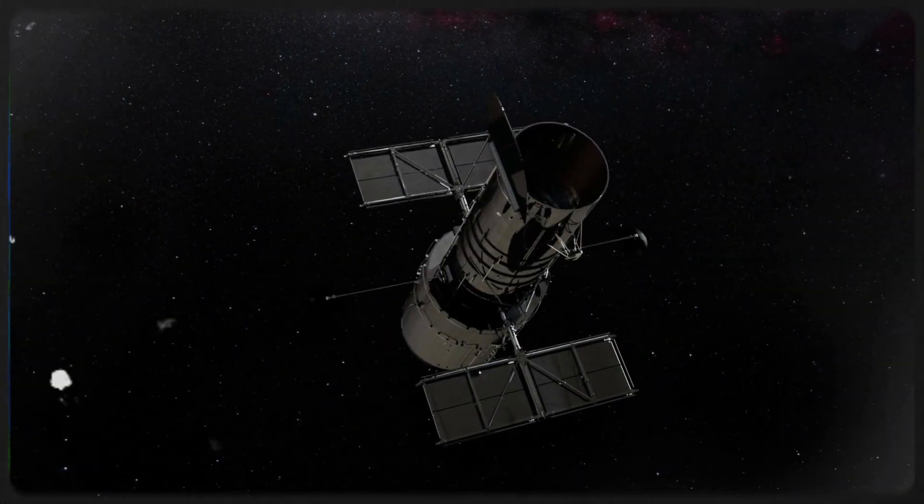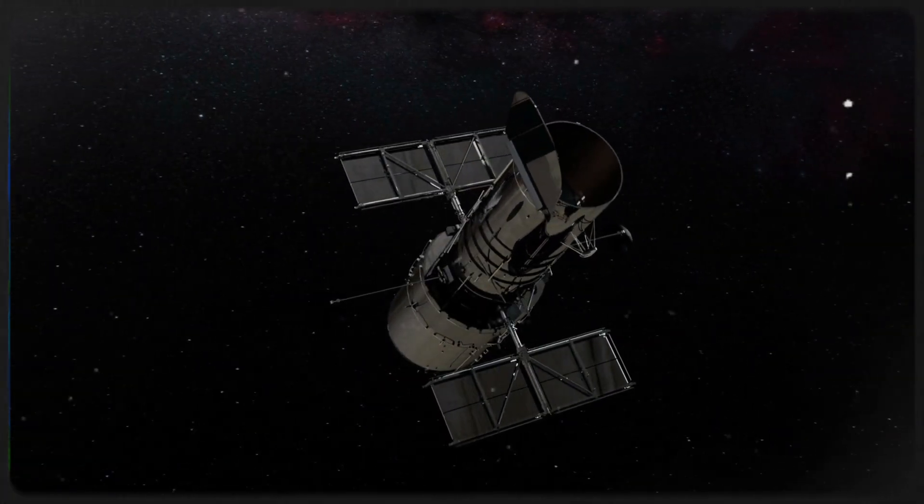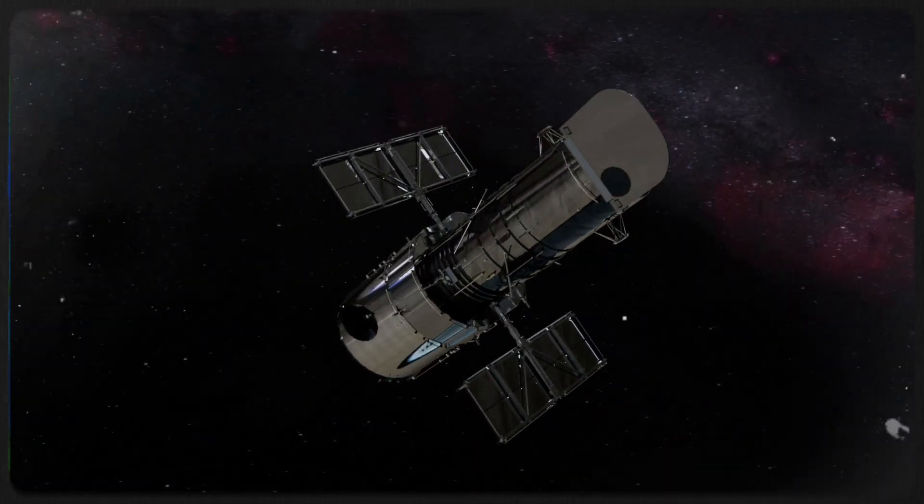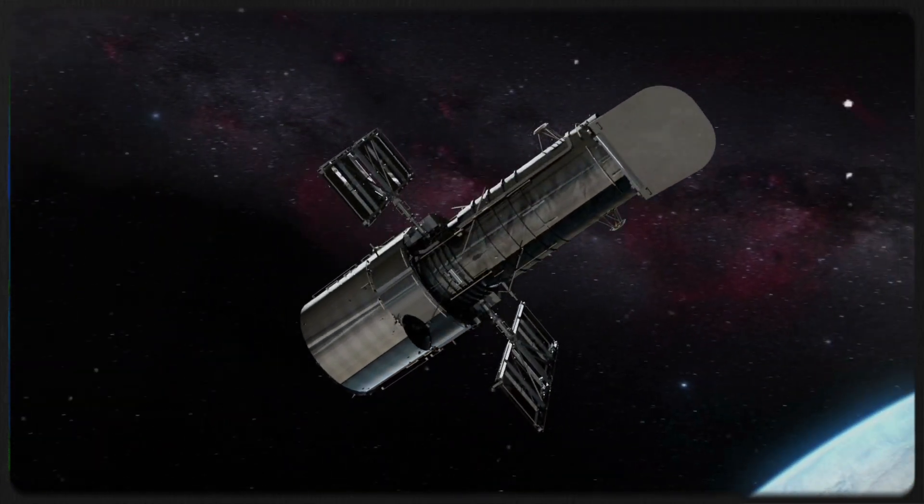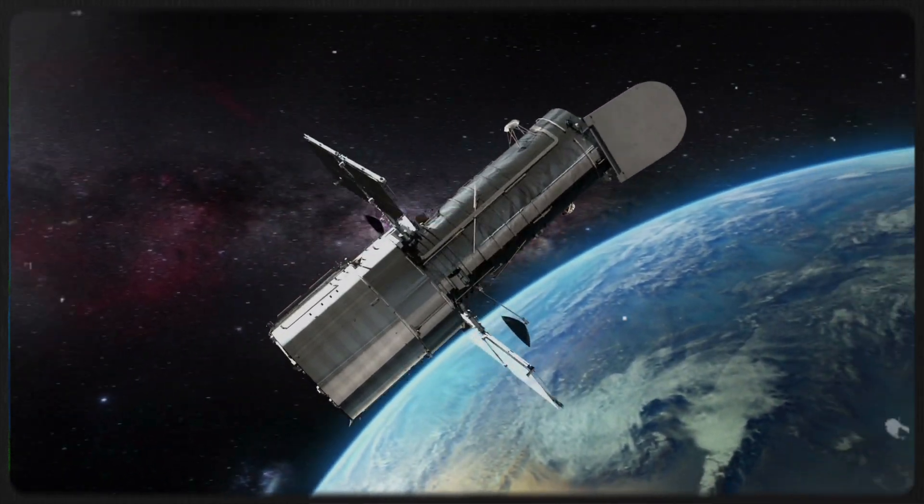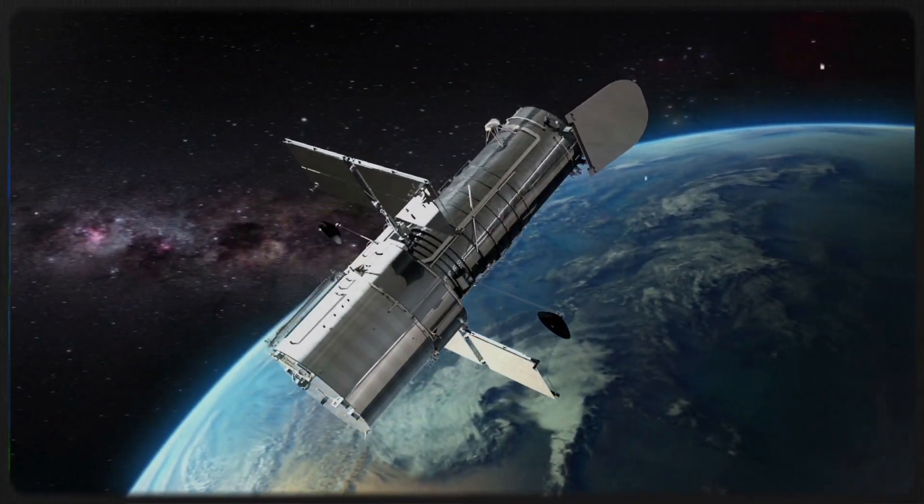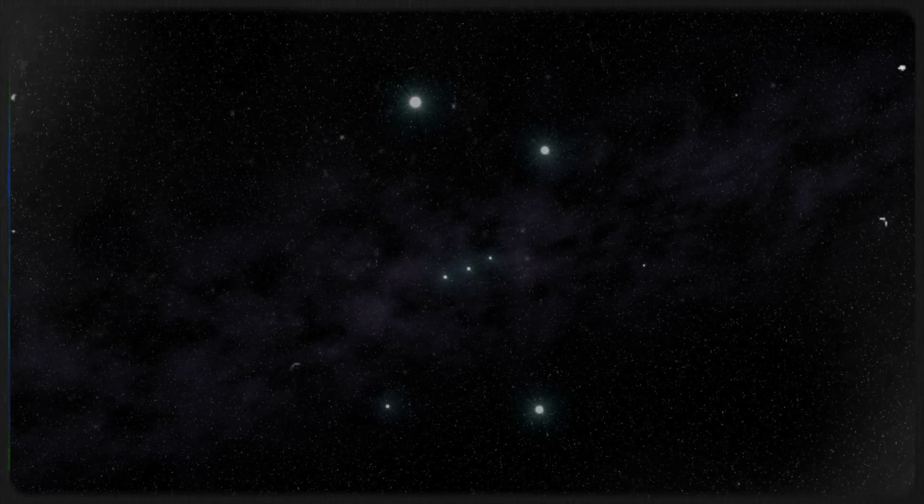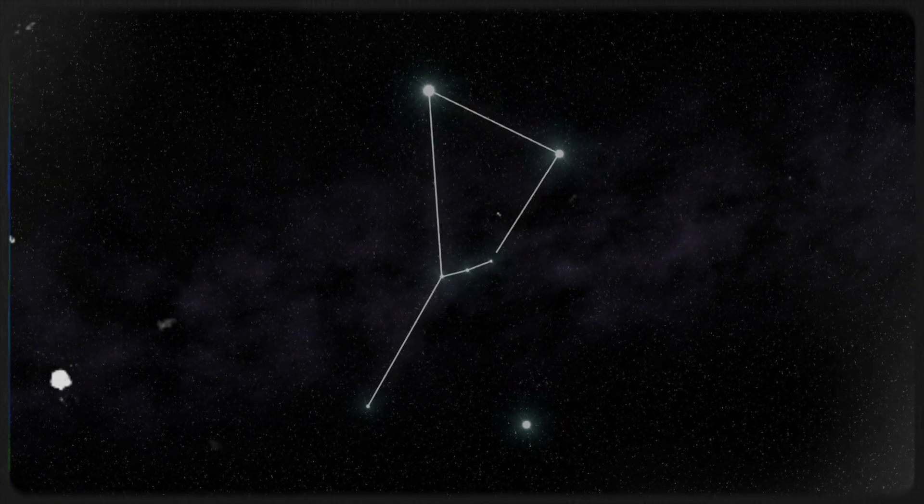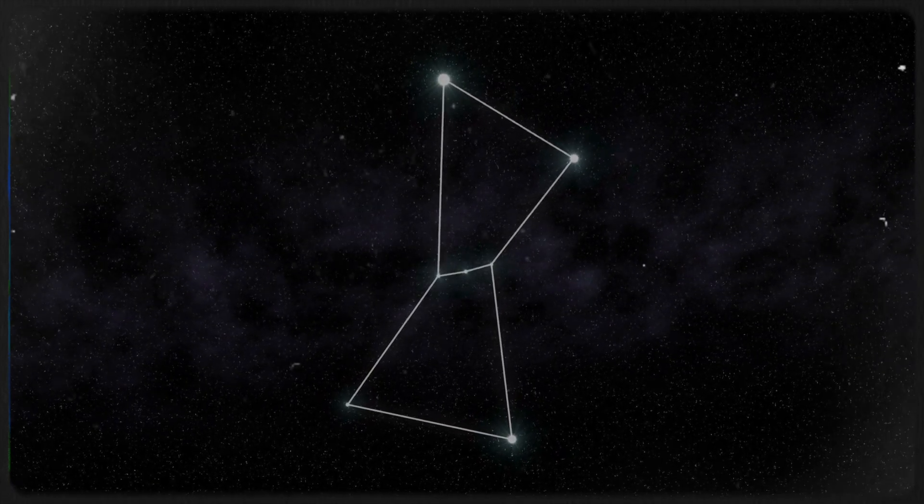For decades, NASA's Hubble Space Telescope has been at the forefront of this exploration. While Hubble wasn't designed specifically to hunt for brown dwarfs, its precision imaging and infrared capabilities allowed astronomers to spot clues—subtle hints buried in the cosmic dust. In fact, Hubble has been quietly compiling decades' worth of data from nearby star-forming regions, including the vast Orion Molecular Cloud Complex.